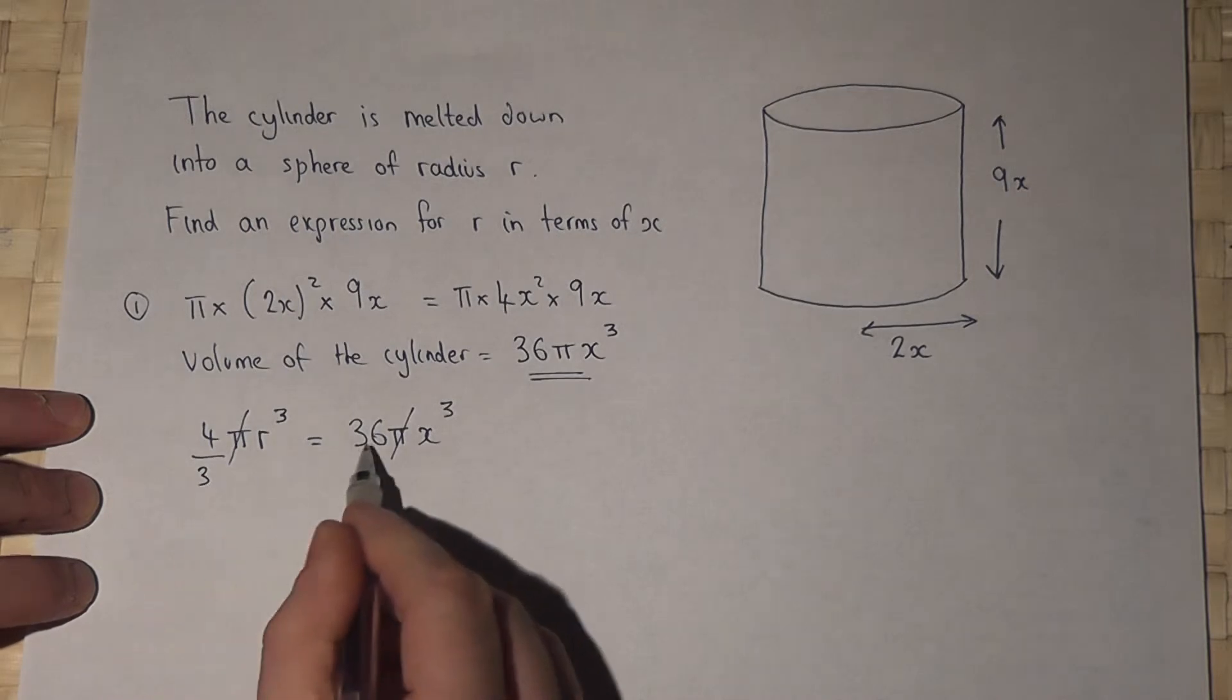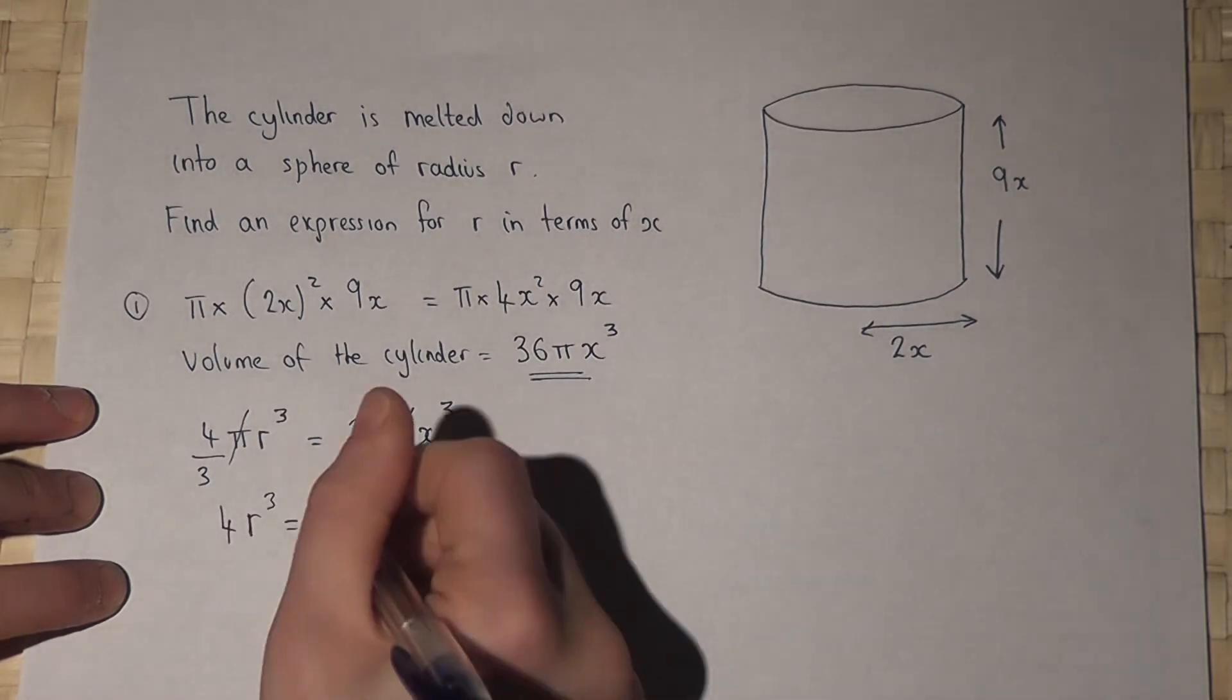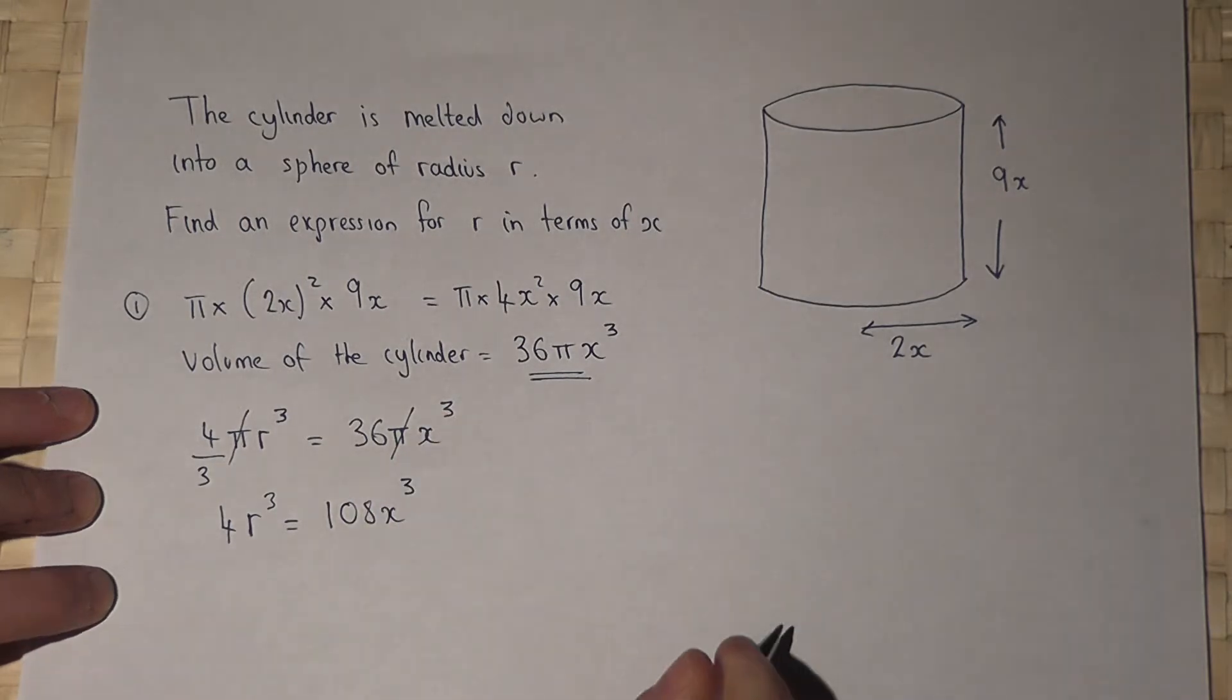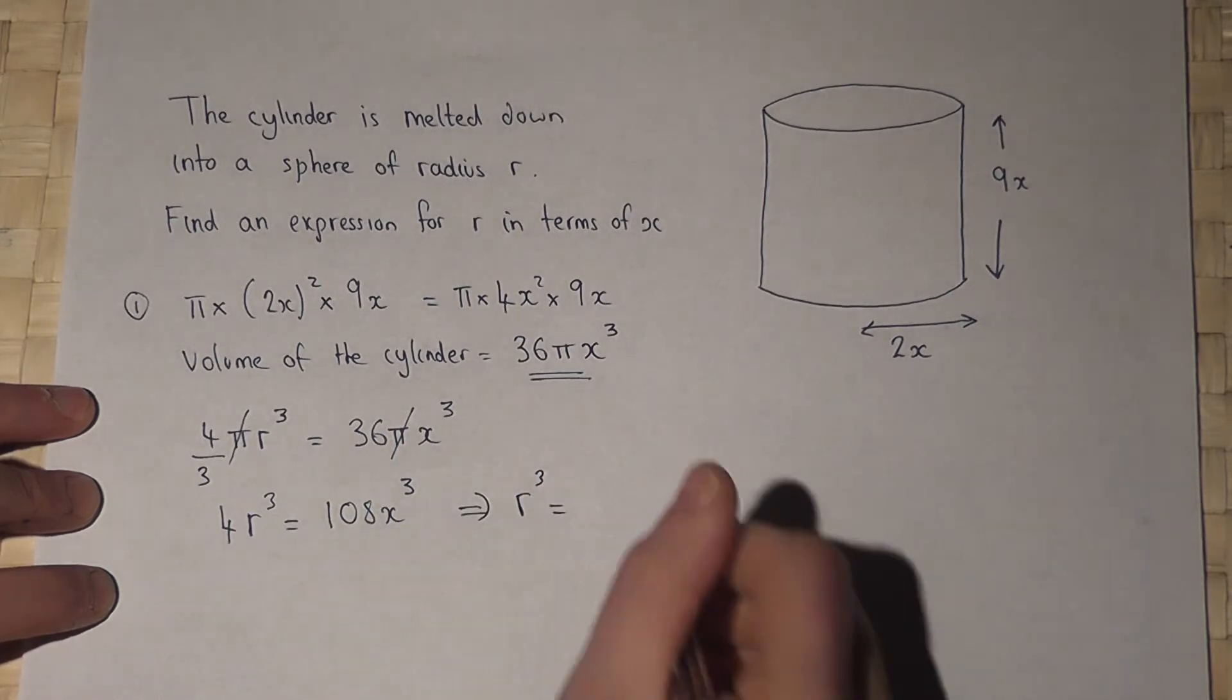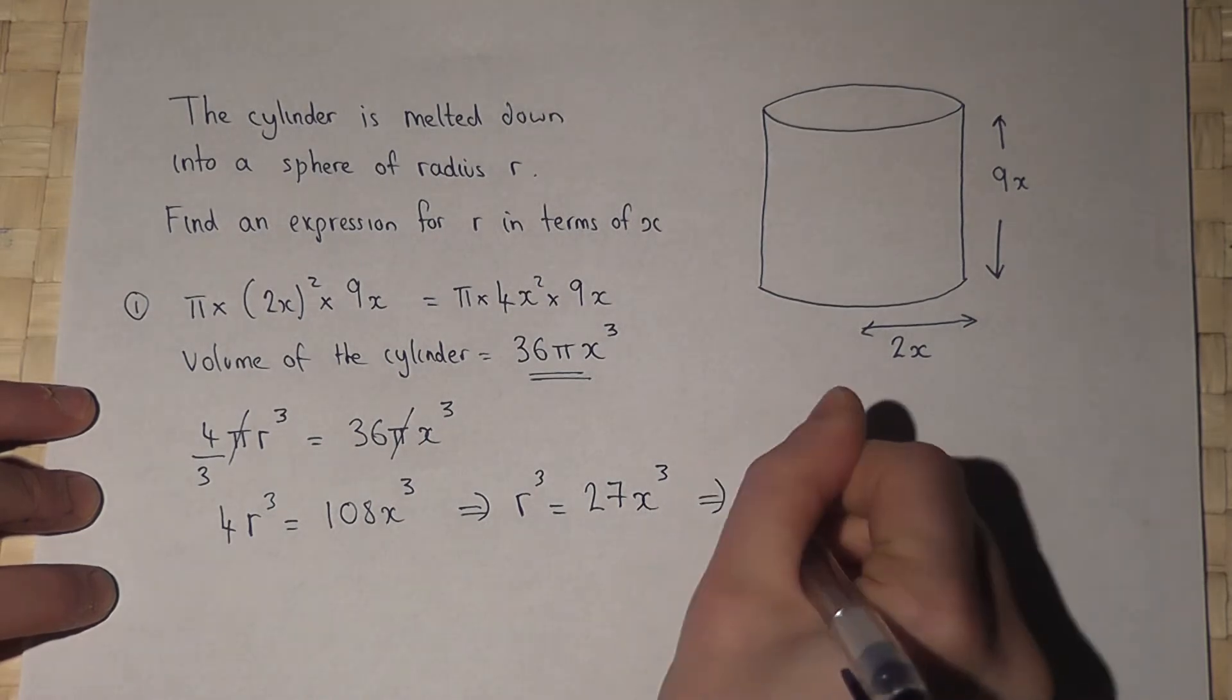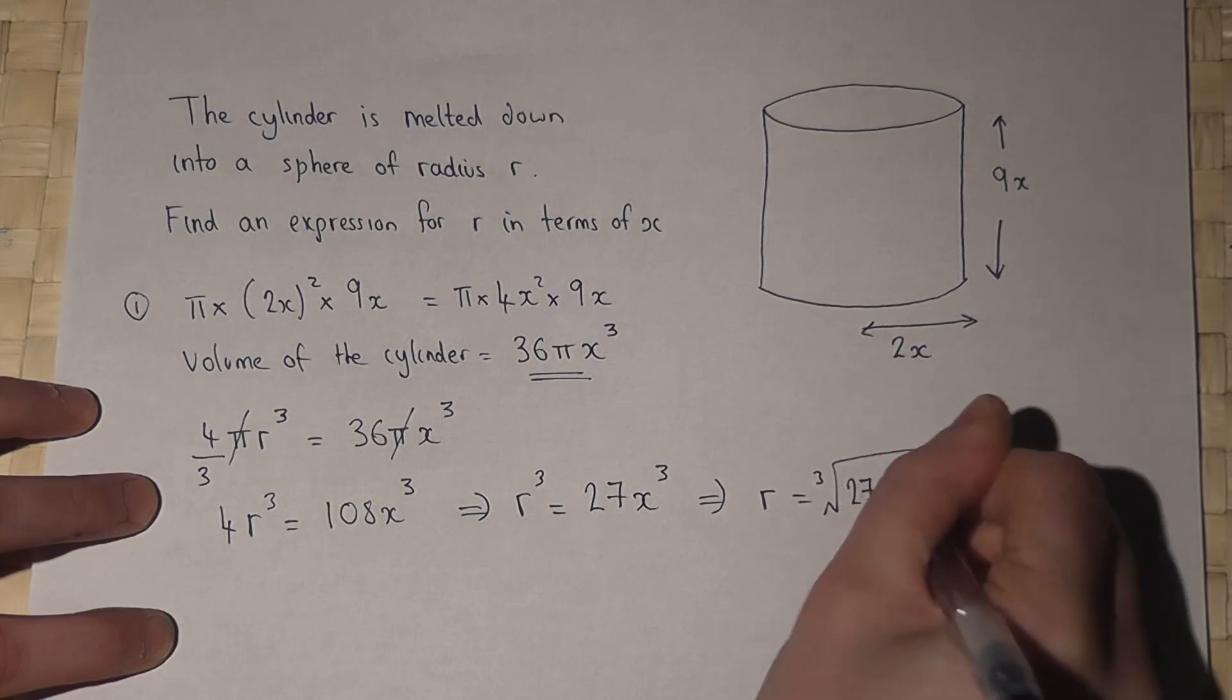I can then multiply by 3, so 4r³ equals 108x³. Dividing by 4, I get r³ = 27x³. So to find r I must take the cube root of 27x³.